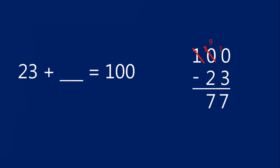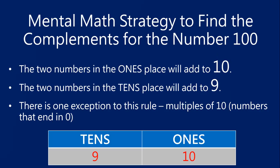That's the traditional way to find the complement for the number 23, but there's a much faster way — a strategy you can do mentally and quickly. The mental math strategy says that the two numbers in the ones column will add together to total 10, and the two numbers in the tens column will add together to total 9. There is one exception: multiples of 10 — numbers like 10, 20, 30, 40 that end in zero — will not follow this rule, but I'll show you how to easily find the complements for those numbers at the end of this lesson.